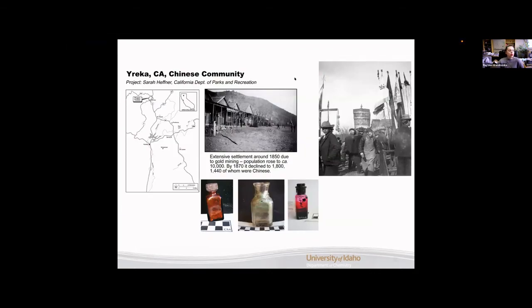Our third site is the Eureka California Chinese Community. This project was headed up by Sarah Heffner. We have a map over here of California. Eureka is up in the northern part. Here's a historical picture of the site and the settlement was very populated in 1850 due to gold mining. The population rose to around 10,000, but in 1870, only 20 years later, it had declined to 1800 and 1440 of those people were Chinese. So the population was predominantly Chinese. Here are the three artifacts from this site. They're all vials with different contents.